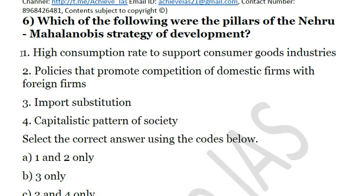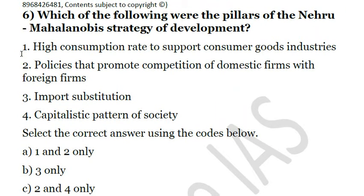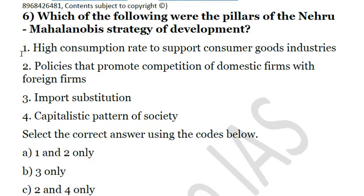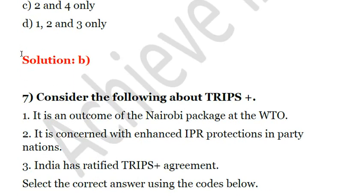Question 5 — Which of the following were the pillars of the Nehru-Mahalanobis strategy of development: First, high consumption rate to support consumer goods industries; second, policies promoting competition of domestic firms with foreign firms; third, import substitution; fourth, capitalistic pattern of society? The Nehru-Mahalanobis strategy focused on import substitution and development of heavy industry. Answer: B, third only.